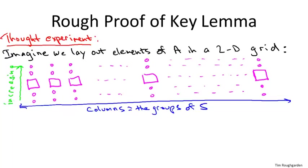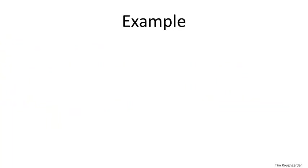We arrange the columns from left to right in order of increasing value of the middle element. So x_i is the i-th smallest among the middle elements: x_1 is in the leftmost column, x_2 is next, and so on up to x_{K/2} — the median of medians, which is our pivot — and then continuing to x_K at the far right.